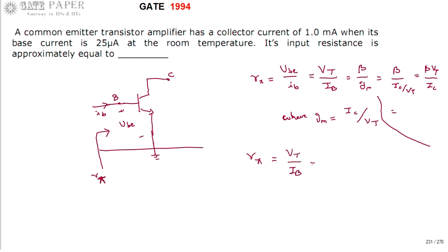So vt is the thermal voltage which is approximately 25 millivolts at room temperature. And base current is given as 25 micro amperes.